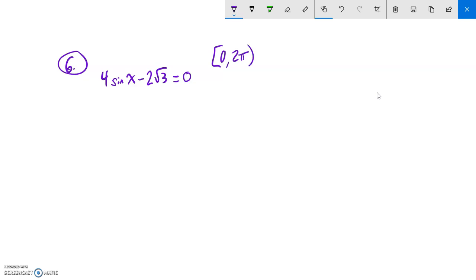All right, so we want to know what x values would make this statement true. What angles could we plug in here to make this equal zero? Let's get sine x alone first. I'm going to add two root three to both sides, and if I do that I have this.